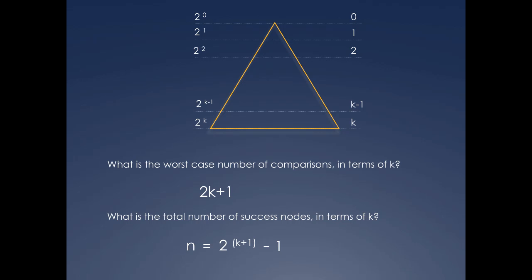As for the number of nodes, the summation of powers of 2 goes all the way to 2 to the power of k for a total of 2 to the power of k plus 1 minus 1. The number of nodes is, of course, equal to the length of the array, which is n.